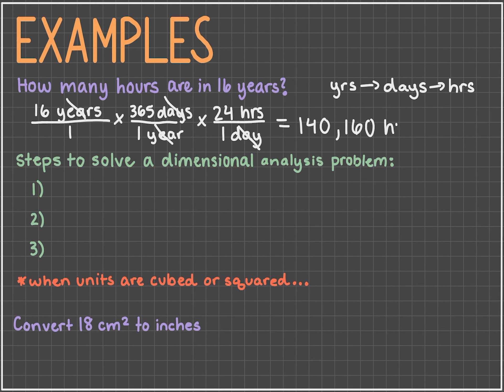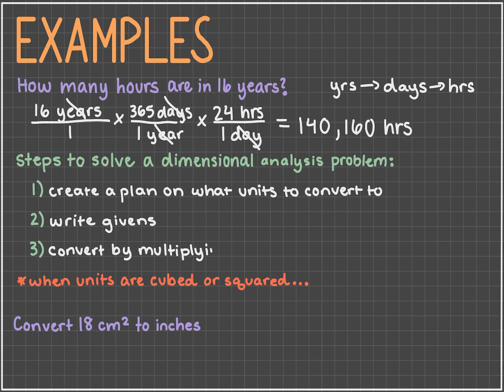So hopefully you noticed in that last problem the steps we take to solve a dimensional analysis problem. We first create a plan on what units we're going to convert to, and then we start the conversion process by first writing out our given and then multiplying that by the units we need it to convert to.